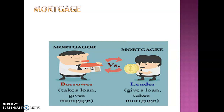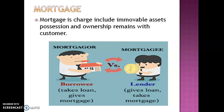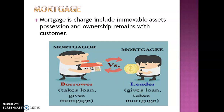The next type of charge is mortgage. Mortgage is a charge that includes immovable assets. Possession and ownership remain with the customer. For example, the mortgager — that is the borrower — has a house and transfers it to the mortgagee — that is the lender or bank. Against that, the bank provides the loan amount to the customer. The borrower takes the loan and the lender gives the loan.